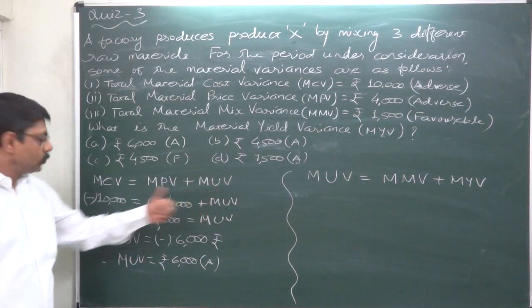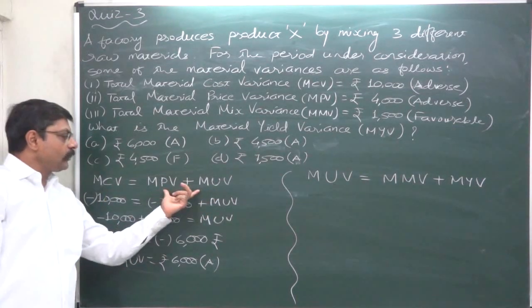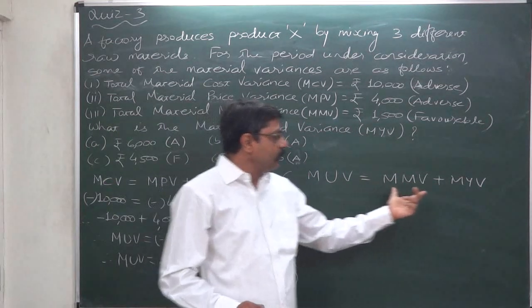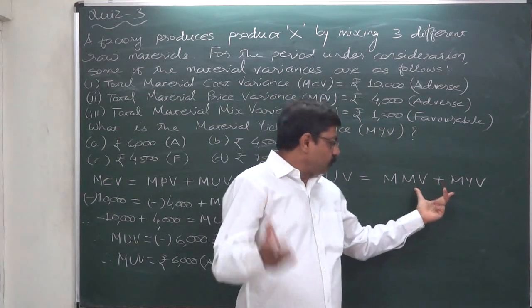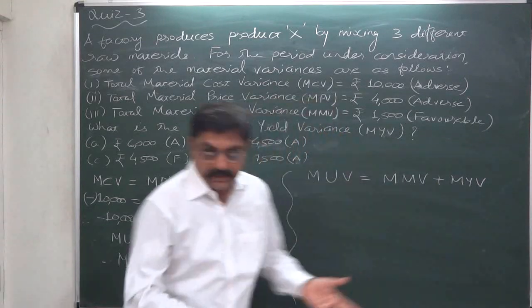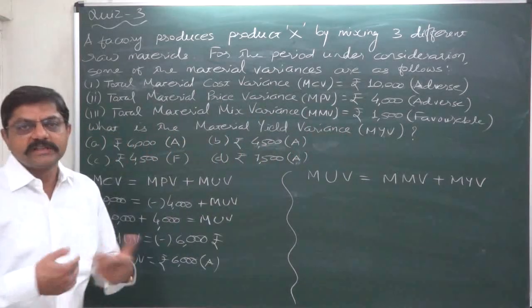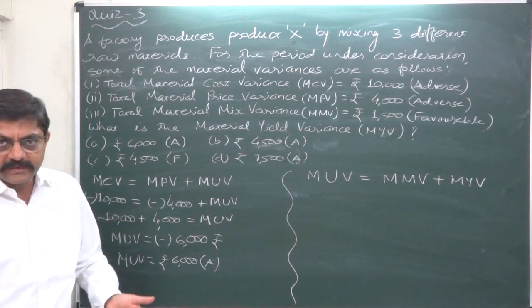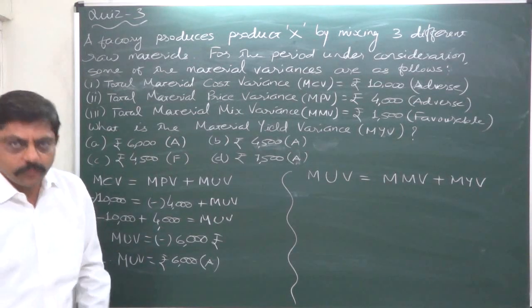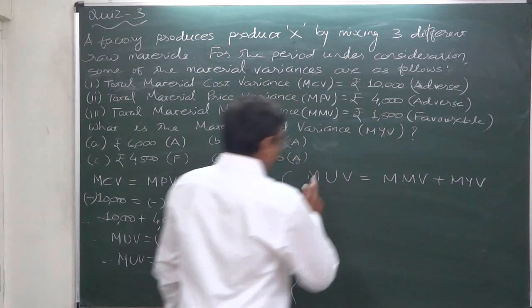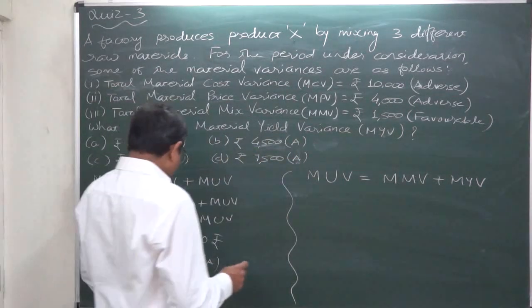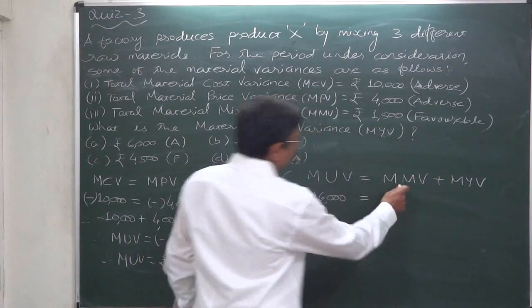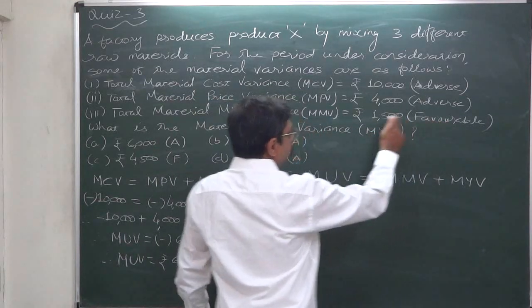Material cost variance can be segregated into two parts: material price variance and material usage variance. So cost variance is the combined effect of price variance and usage variance. Similarly, usage variance is the effect of mix variance and yield variance. Yield variance is also known as output variance, and in some older reference books it is stated as sub-usage variance, but yield variance is the most popular term.